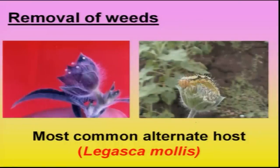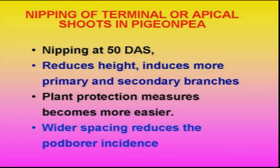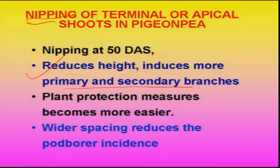Another cultural technology is the removal of the weed Lagasca mollis, which grows along the bund and should be removed. It serves as a major source for egg laying and larval survival during the off season. When the crop is in the vegetative stage, another important cultural practice recommended is nipping — removing the growing central shoot — which reduces the height and encourages primary and secondary branches, thereby making plant protection much easier as the plant grows to a manageable height.